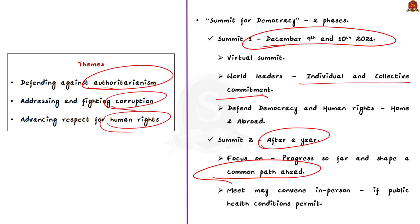These are the basic points regarding the Summit for Democracy. In this discussion we covered what the summit is, why we need it, who can participate, the themes of the summit, and its two phases. We will see about this summit in more detail once it actually happens.